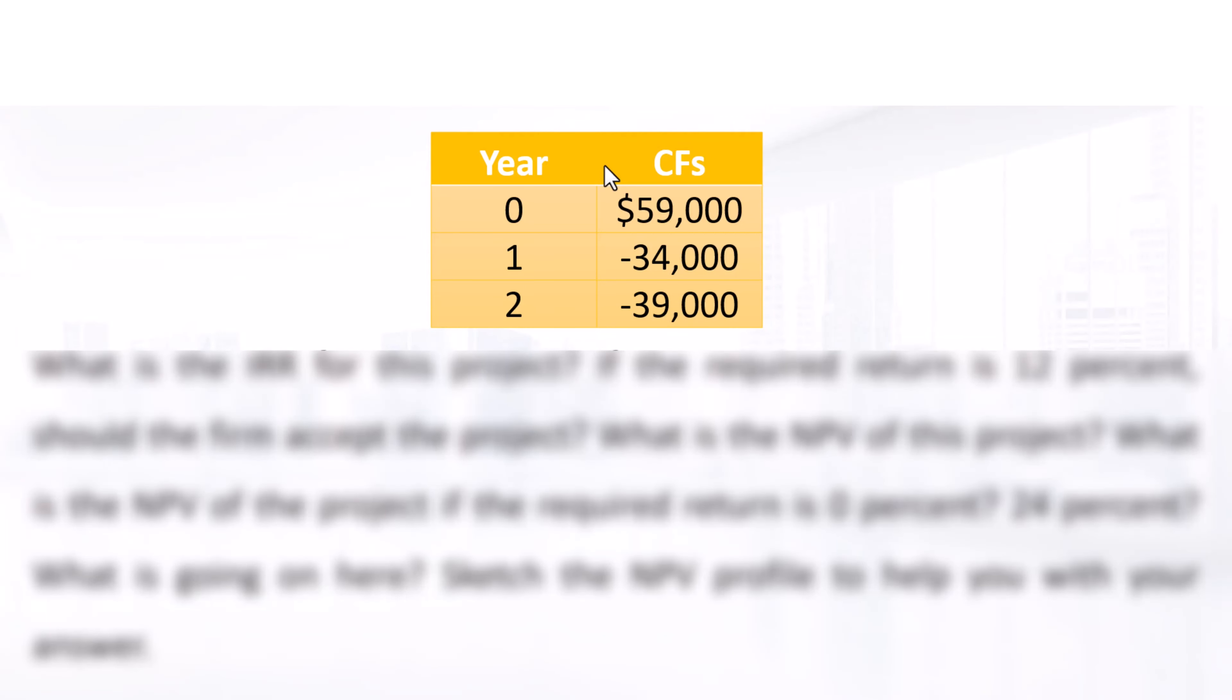A project has the following cash flows: Year 0, $59,000; Year 1, $34,000 outflow; Year 2, $39,000 outflow.